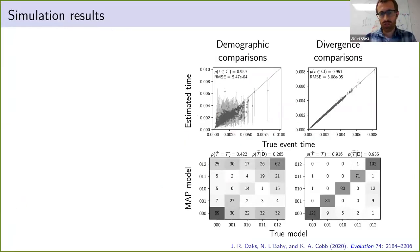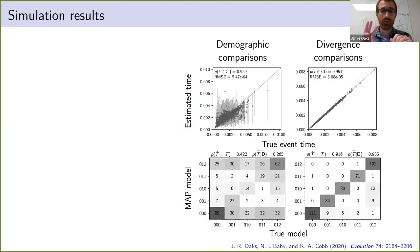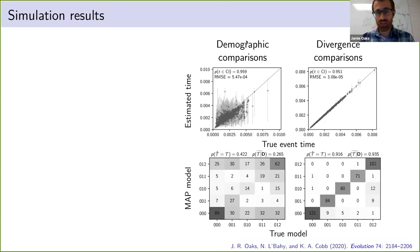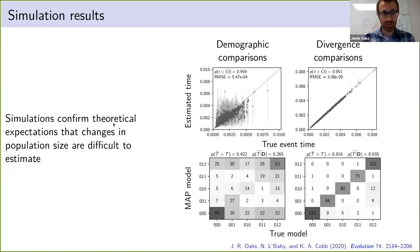Most of the machinery was already in EcoEvolity — we just had to modify some algorithms to work with population size changes. We ran simulations with six comparisons: three pairs of populations that diverged, and three single populations that either expanded or contracted. What we found is we do really well at estimating the timing and sharing of divergence times, but are much less successful at doing this with population size changes — which is exactly what we expected from theory, given the unidentifiability problems.